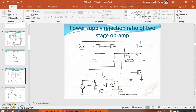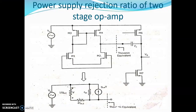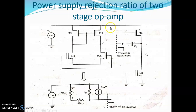Our next topic is power supply rejection ratio of a 2-stage op-amp. You can see here in the circuit diagram. The power supply rejection ratio is a parameter that indicates how much an op-amp is able to attenuate any disturbance signals. When any disturbance occurs in an op-amp, it is attenuated using the factor called power supply rejection ratio. Now we are going to see the PSRR for the 2-stage op-amp.